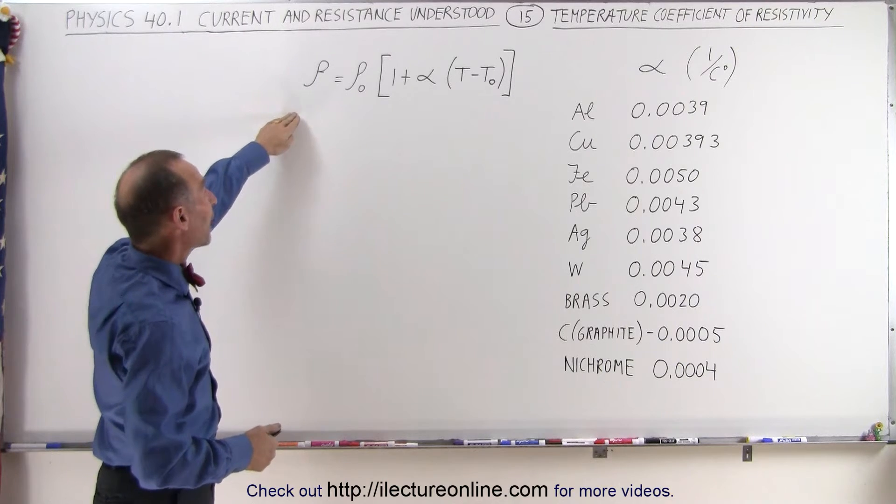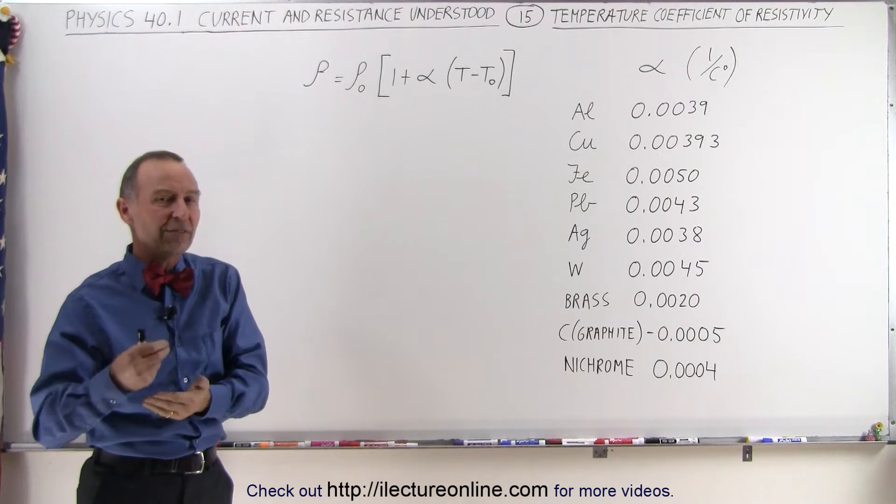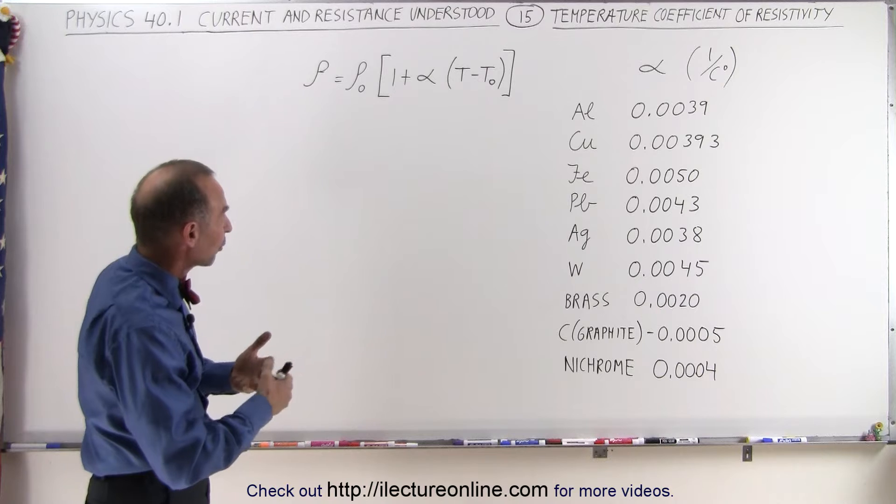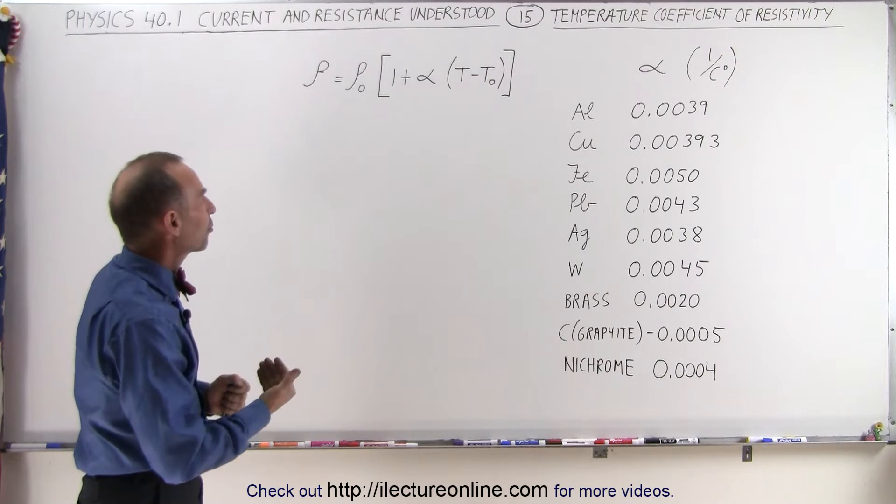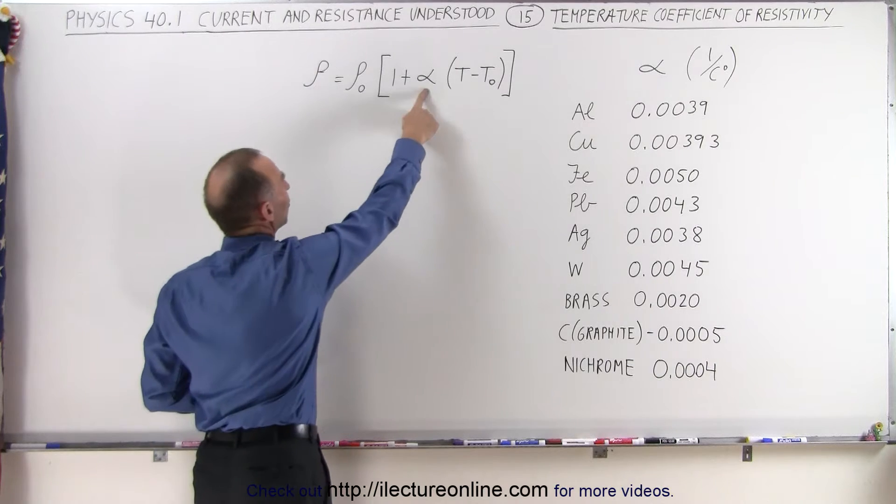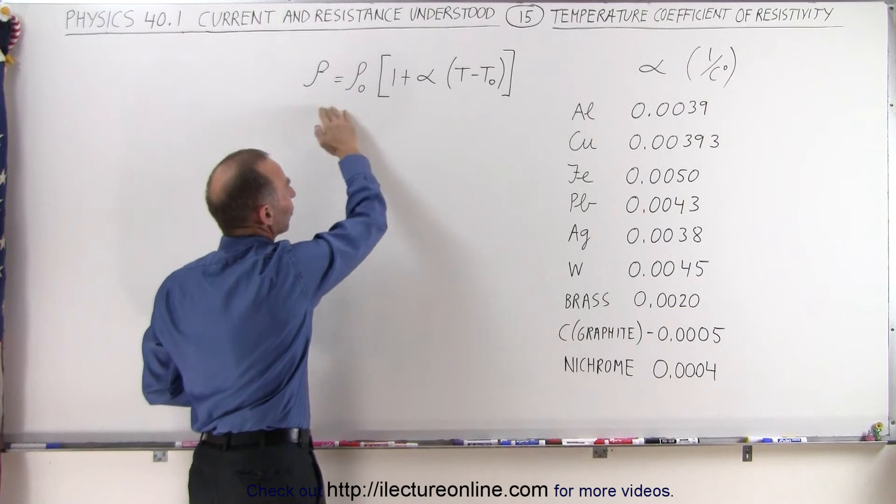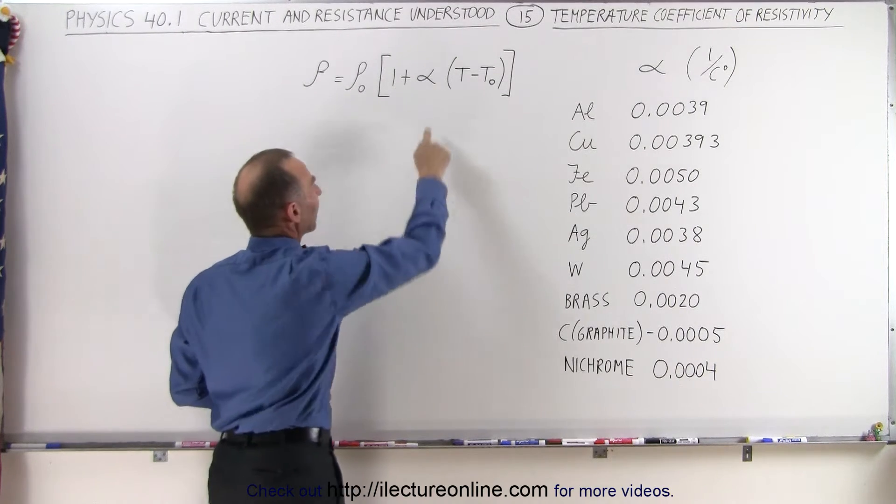Now again, this is the equation that we had to use to find the resistivity of a conductor or anything that's made out of some sort of metal that changes over temperature.